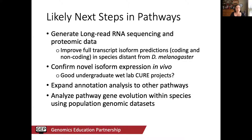Likely next steps include generating long-read RNA sequencing and potentially some proteomic data. Proteomic data would help clarify things like the correct start codon when it's ambiguous in a well-diverged gene. Long-read RNA-seq will help improve full transcript isoform predictions in species especially distant from melanogaster, since short-read RNA-seq is not good enough for accurate whole-isoform predictions. In the lab, we can start confirming novel isoform expression in vivo, which could become a wet lab CURE extension to the Pathways project for GEP students.